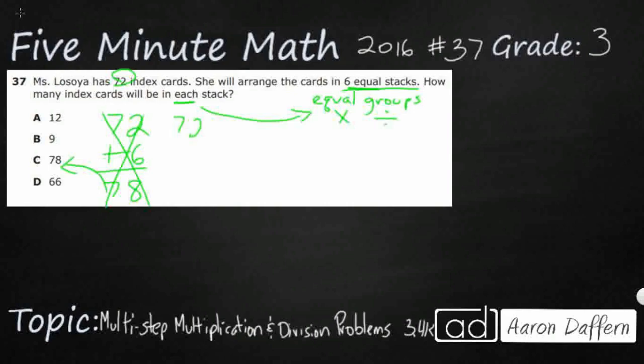Some students might want to subtract the two. We can regroup here and you can see we're going to get 66, which is our answer selection here. Once again that doesn't make any sense. If you have six equal stacks of 66 it's going to be a heck of a lot more than 72.